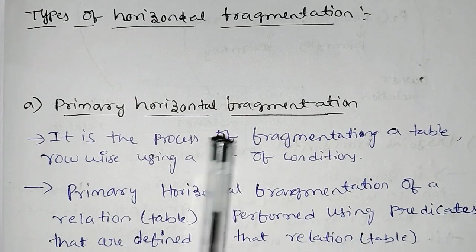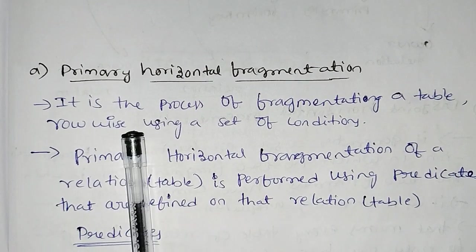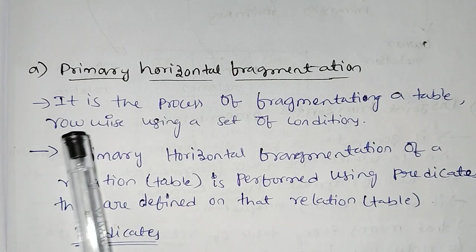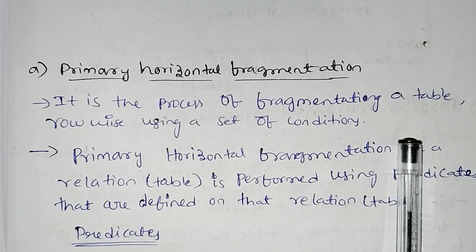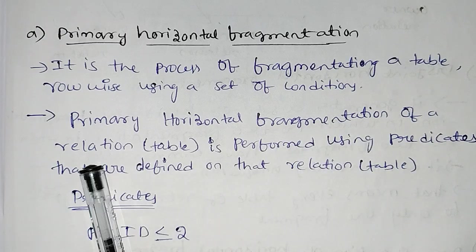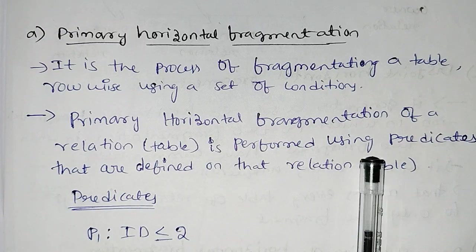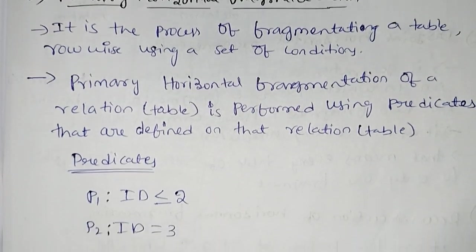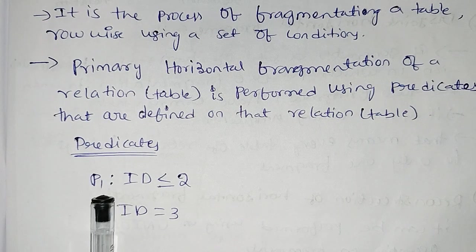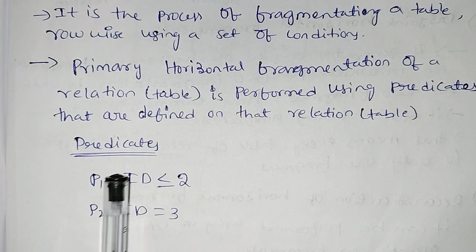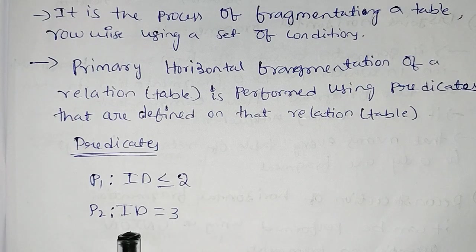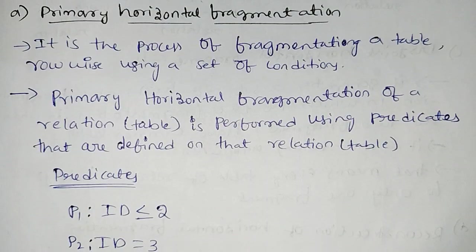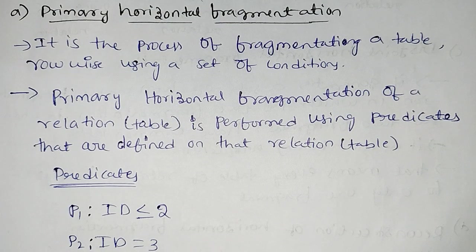Now we have types of horizontal fragmentation. The first type is primary horizontal fragmentation. It is the process of fragmenting a table row-wise using a set of conditions. Primary horizontal fragmentation of a relation or table is performed using predicates that are defined on the relation table.